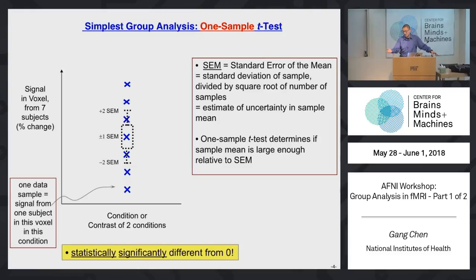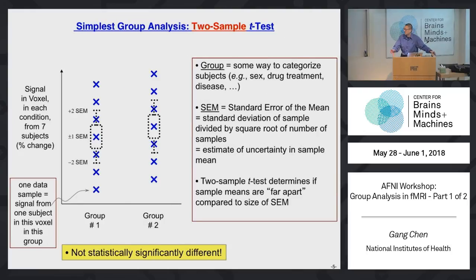Based on the t-statistic, we can say something about the mean. If t is relatively large, then based on traditional statistics and the null hypothesis, we can reasonably reject the null hypothesis and claim that voxel is activated — that's statistical significance. Now, suppose we have two groups, each with seven subjects. We compare the two groups by getting the mean of the group difference, then computing the standard deviation of that group difference, and calculating the t-statistic.